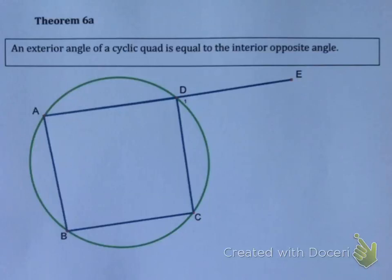Let's have a look at theorem 6a and its converse 6b. The proofs of both of these are not examinable, and therefore we're just going to look at what they say and what reason we're going to use when we need this theorem. So let's look at 6a.